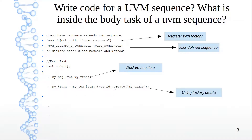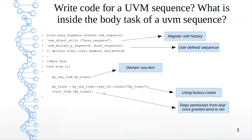You instantiate my_trans with the factory method create, again to leverage the lookup table and override functionalities. Then next is start_item. This is a blocking call — you're requesting that the sequencer grant you access to send my_trans to the driver. Once permission is granted, the next step is to randomize my_trans. When you randomize an object after the start_item call, this is called just-in-time or late randomization.